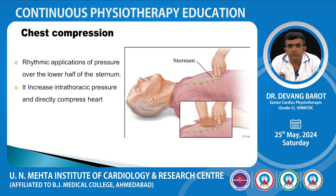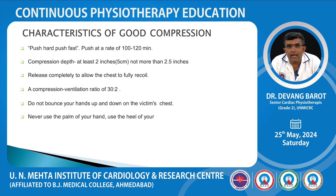Chest compression is the rhythmic application of pressure over the lower half of the sternum. It increases intrathoracic pressure and directly compresses the heart. Characteristics of good compression: push hard, push fast — at a rate of 100 to 120 per minute. The depth of compression should be at least 2 inches, not more than 2.5 inches.